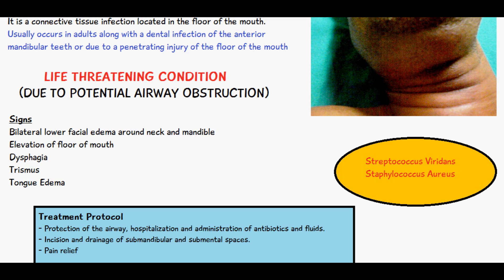The signs of Ludwig's angina involve bilateral lower facial edema around the neck and the mandible. It can also involve elevation of the floor of the mouth, dysphagia (difficulty swallowing), trismus (difficulty opening the mouth), and there is usually tongue edema as well.